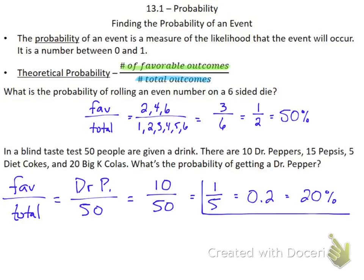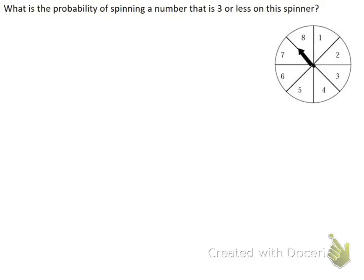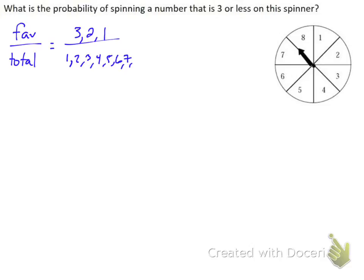I can reduce that fraction down to one-fifth, which gives me 0.2, which is 20%. Pretty much any of those three forms of the answer would be acceptable. The third problem is the probability of spinning a number that is three or less on a spinner. Favorable over total: I could get a three, a two, or a one — that's three favorable outcomes. The total possibilities are one through eight, so eight total. Three divided by eight gives me 0.375, which is 37.5%.